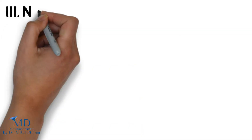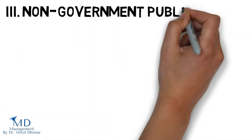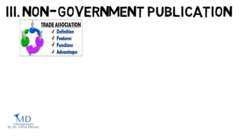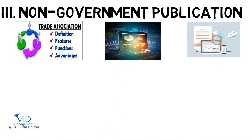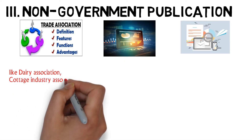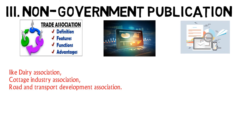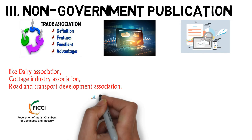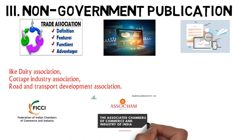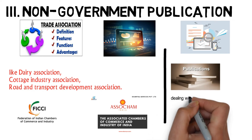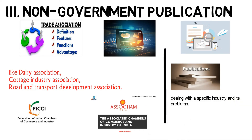4. Publications of international bodies like the UNO. Third, non-government publications: Trade associations often compile data from government and collect additional information from their members, like dairy associations, cottage industry associations, road and transport development associations, Federation of Indian Chambers of Commerce and Industry (FICCI), Associated Chamber of Commerce, etc., which occasionally bring out publications dealing with a specific industry and its problems.